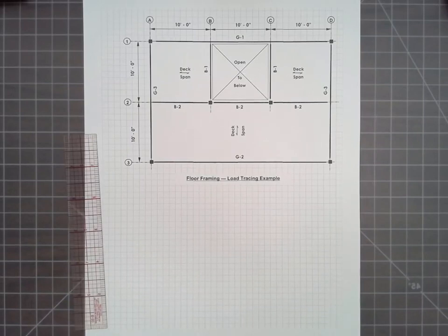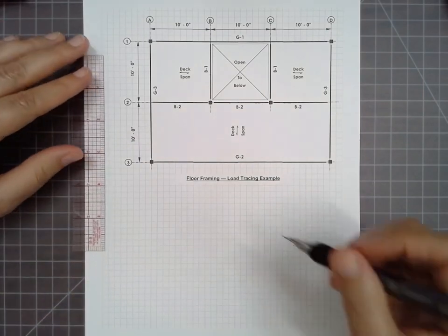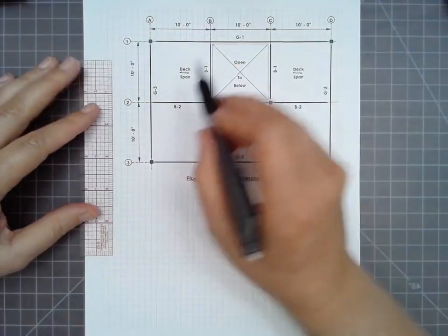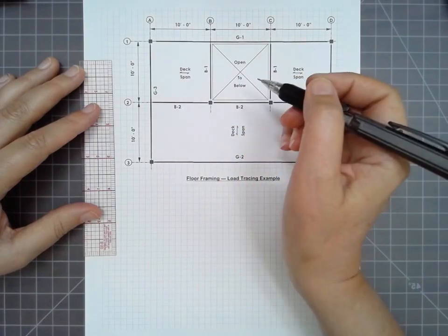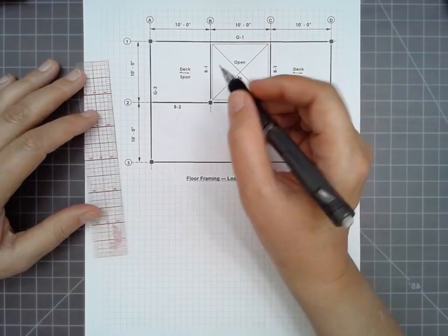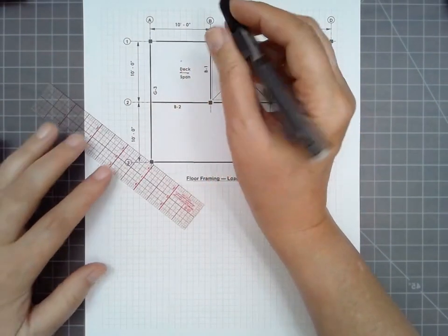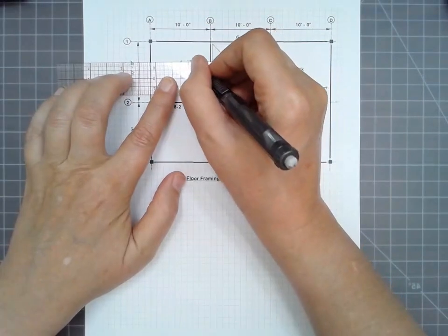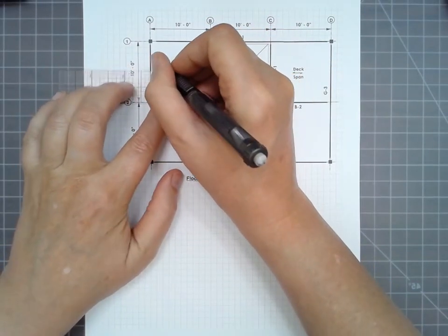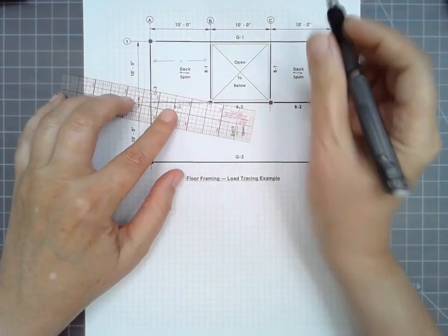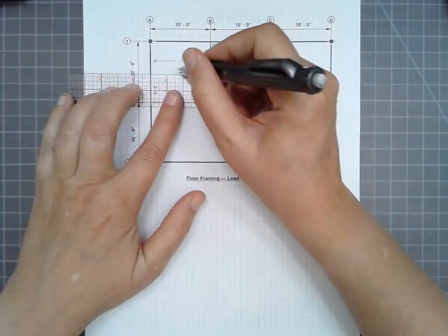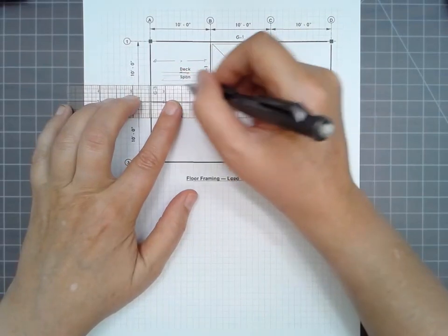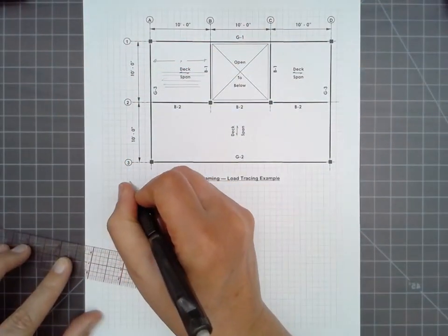The first step that we want to follow is to understand how do we diagram these as a load transfer mechanism. The first thing that we want to recognize is that the deck span indicates that this is a one-way structure, that the loads are transferred in one direction first, and then transferring to another. So any load that is placed on this deck can only be channeled to the left and right as we look at it in the plan.